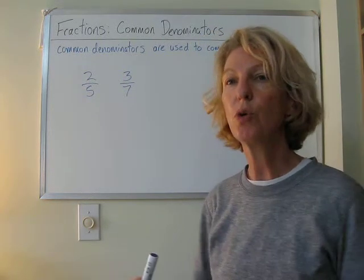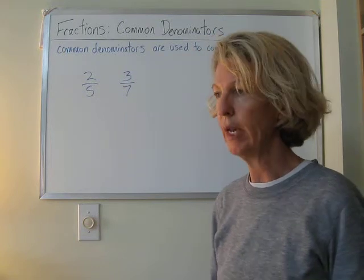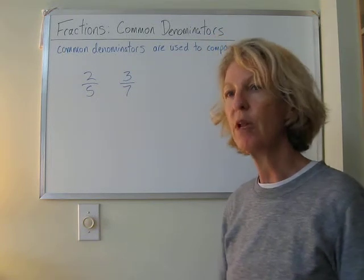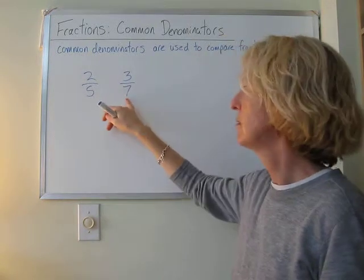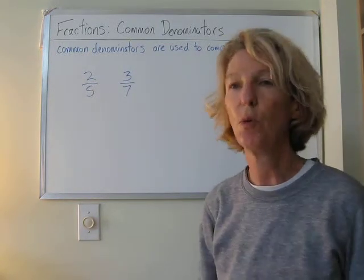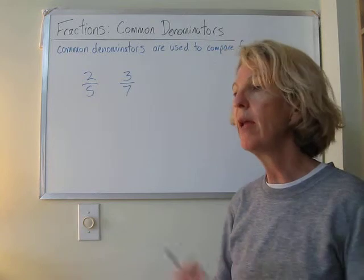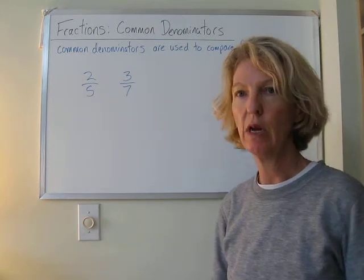Now, in order to choose a common denominator, we have to think of a number that can be divided by 5, as well as 7. What's a number that we can divide by 5 and divide by 7? 35! Great!